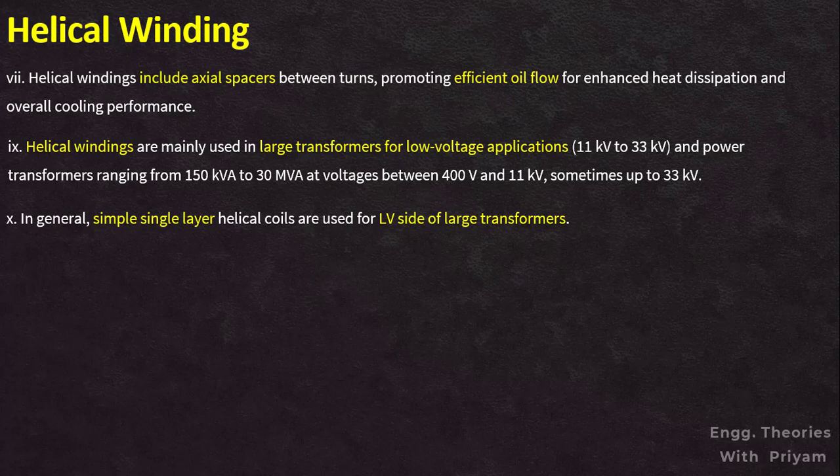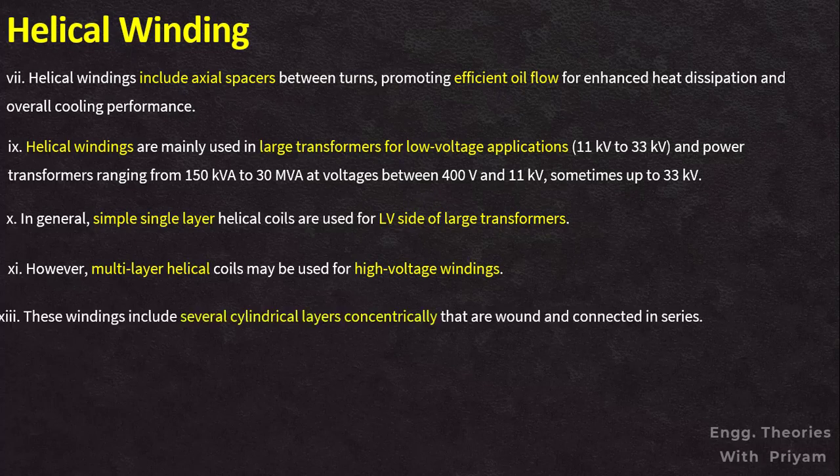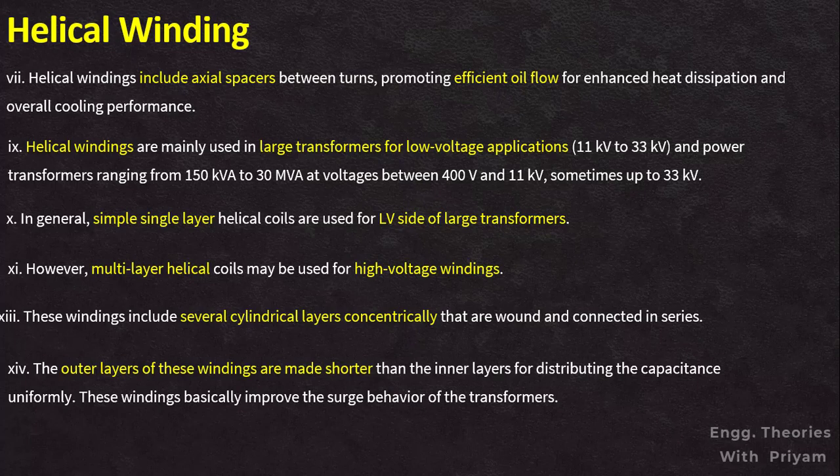In general, simple single-layer helical coils are used for LV sides of large transformers; however, multi-layer helical coils may be used for high-voltage windings. Multi-layer helical winding is commonly used for high-voltage windings, specifically at 110 kV and above. These windings include several cylindrical layers wound concentrically and connected in series. The outer layers are made shorter than the inner layers to distribute the capacitance uniformly, which improves the surge behavior of the transformers.